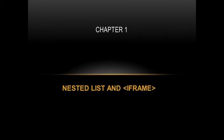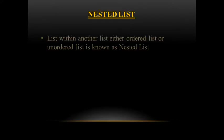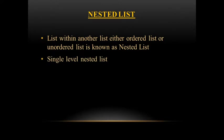Hello everyone, let's start with the next topic of advanced web designing: nested list and iframe. First we learn about the nested list — a list within another list, either ordered or unordered, is known as a nested list. There are two levels: single-level nested list and multi-level nested list. We'll see programs for each one by one.